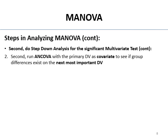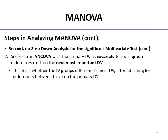Then you run an ANCOVA. You already did your ANOVA and it's printed as part of the MANOVA output. You do an analysis of covariance where you use the primary DV as a covariate and see if they differ on the next most important DV. This tests whether the IV groups differ on the secondary DV after removing differences associated with the primary DV — because the DVs are supposed to be correlated, there should be shared variability.